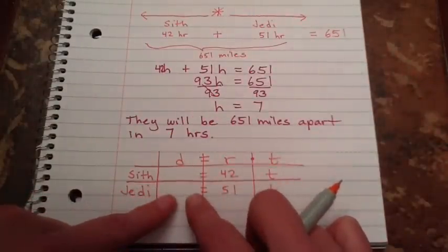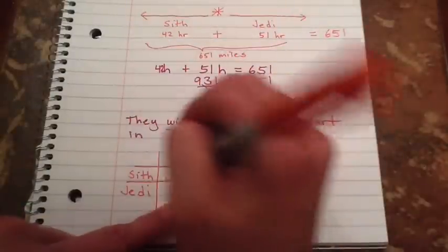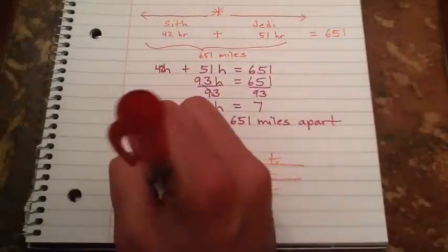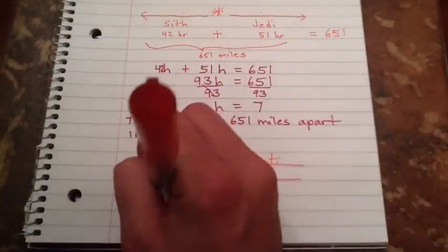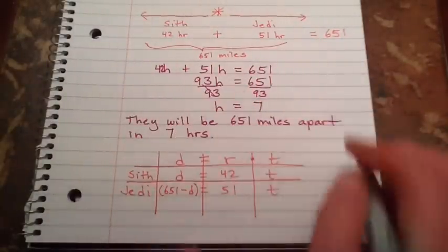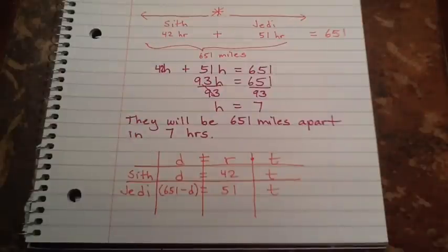So one of them is just going to be D. And then the other one is going to be the total distance apart. Subtracting the distance of the other. It's the opposite of what you saw in the same direction. You have to be really careful of that.